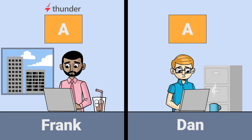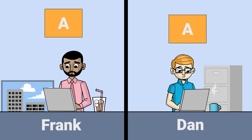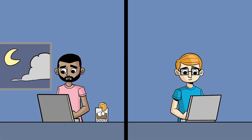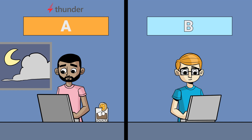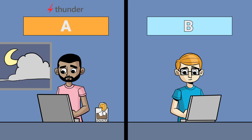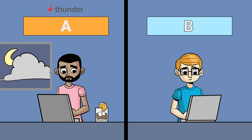That evening, Frank and Dan take their laptops home and are exposed to an ad that is a different size. Frank sees the same ad, but Dan is randomly served version B, because each ad size is a different test on the other ad server.